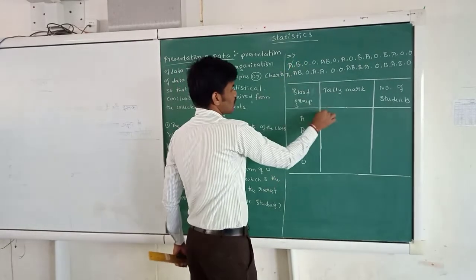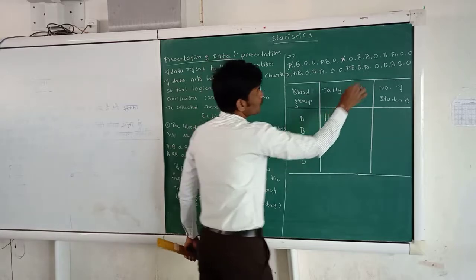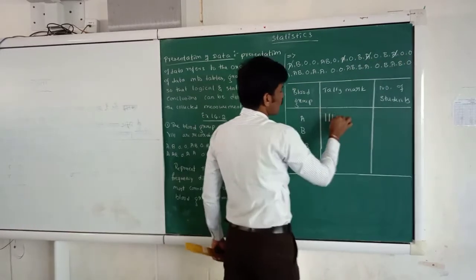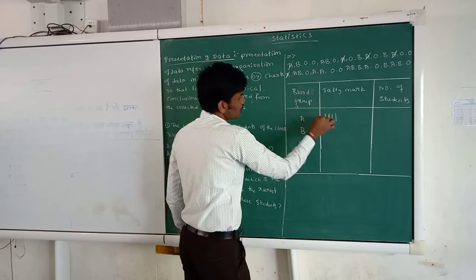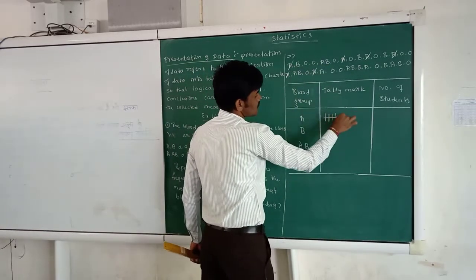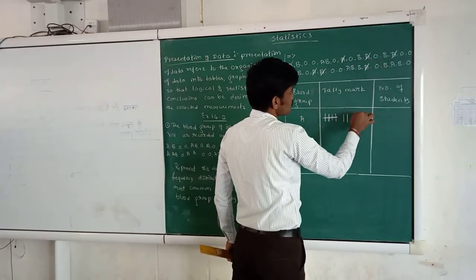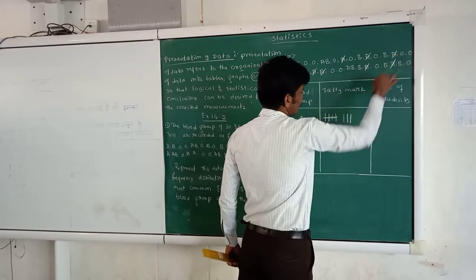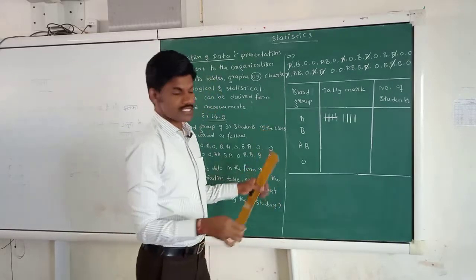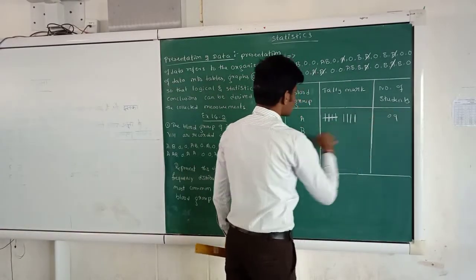One is there, tally mark one. One, two, two, three, three, four, four, five - you need to make a cross. Five, six, six, seven, seven, eight, eight, nine, nine. So here blood group A students have five plus four, nine students. That's very easy.